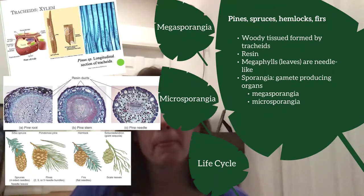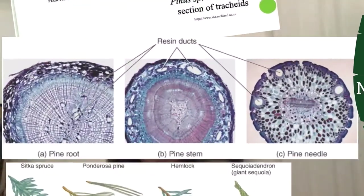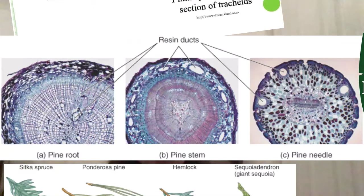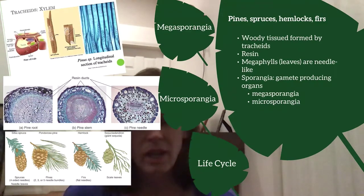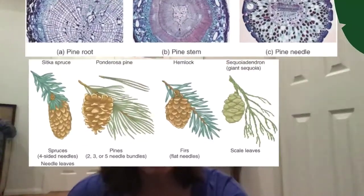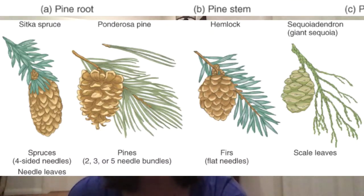Many of these trees also produce resin — that sticky substance you might refer to as sap. In a cross section of the trunk you can see the resin ducts that run the length of the trunk so the sap flows along it. The megaphylls — the true leaves — are actually needle-like. These are not microphylls; they are true megaphylls. You can see different examples of what the leaves look like — more needle-like in appearance, still green, and they stay green year-round, meaning they photosynthesize year-round as opposed to trees that drop their leaves in colder latitudes.